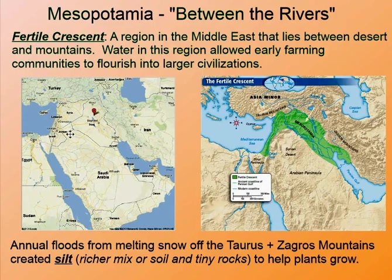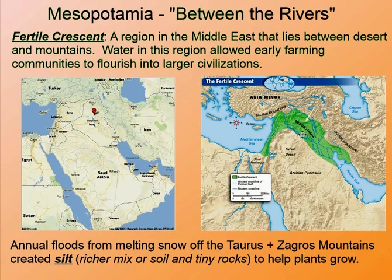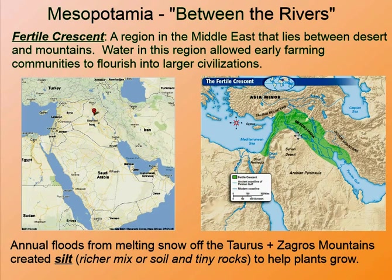The Fertile Crescent is a region in what we know today as the Middle East — countries like Israel, Jordan, Syria, Lebanon, Iraq, Kuwait, Iran, and Saudi Arabia. This is Mesopotamia. It's an area that lies between desert — the Syrian desert — and the mountains, the Taurus and the Zagros Mountains. Here's the Tigris River and here's the Euphrates River. This is what we consider modern-day Iraq.